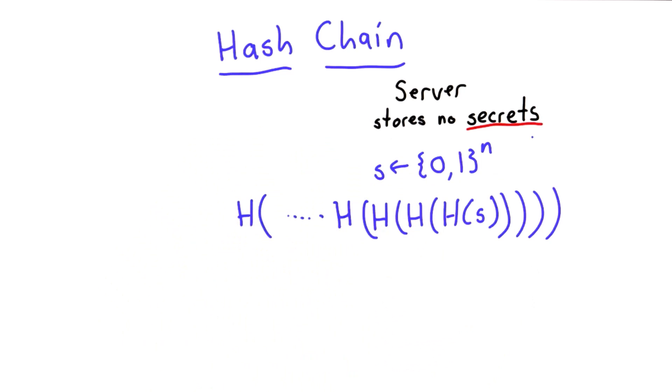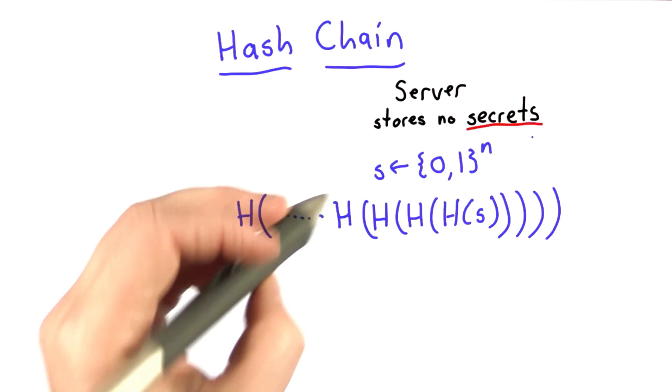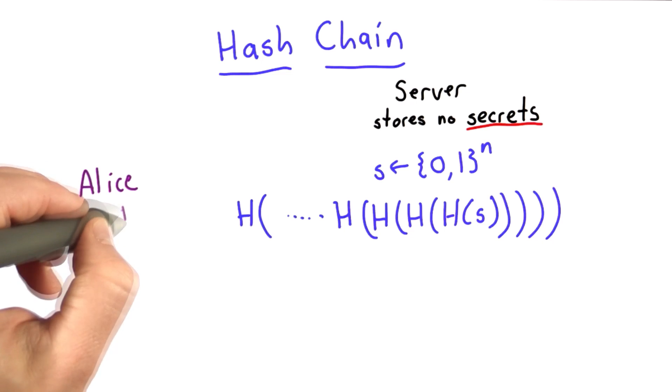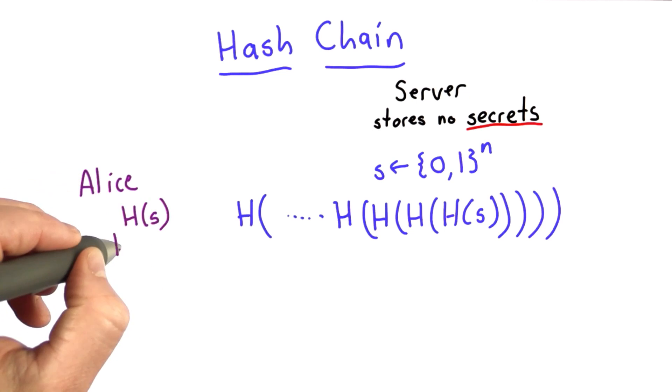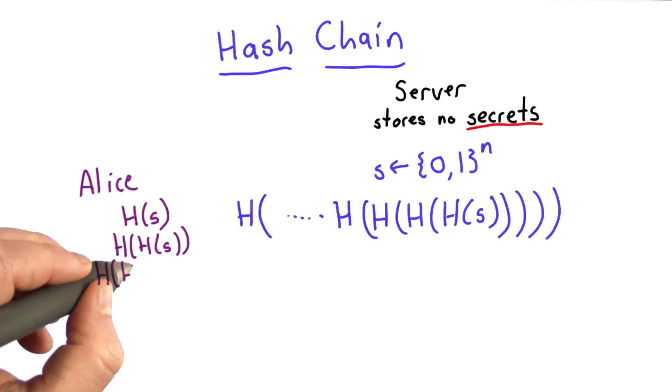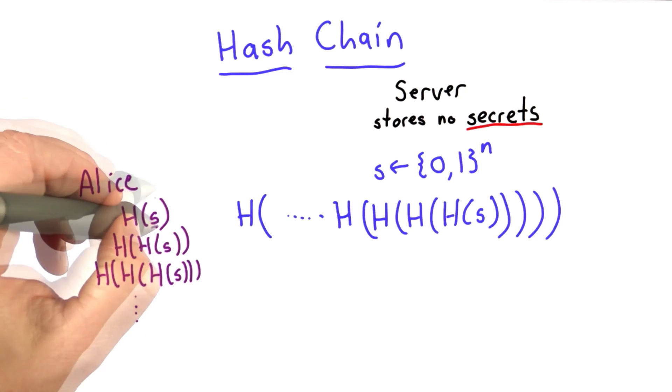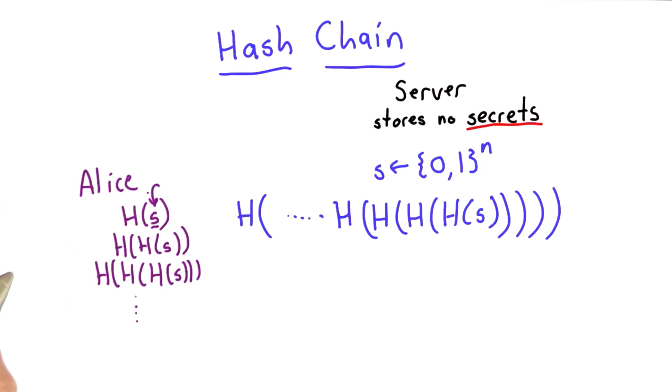This could be done anywhere. I've written it on the server side. The important point at the end of this, so what Alice gets is the hash of s, the hash of the hash of s, the hash of the hash of the hash of s, and so forth. Of course, if she just has s, she could compute all of these herself.